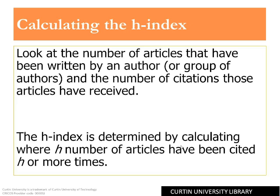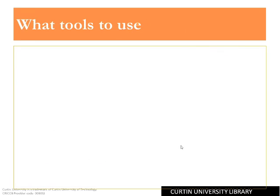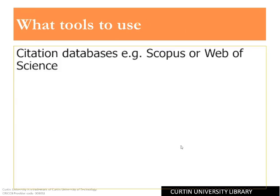Many factors can influence the H-Index, which we will discuss shortly. The citation databases most commonly used to calculate the H-Index are Web of Science and Scopus.